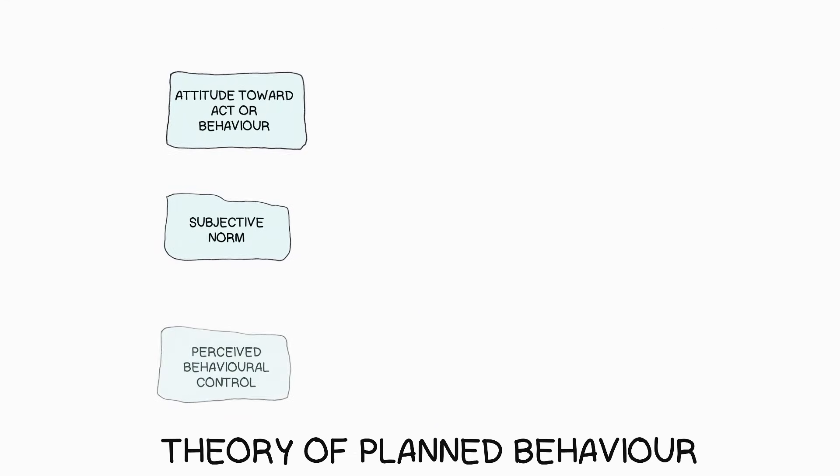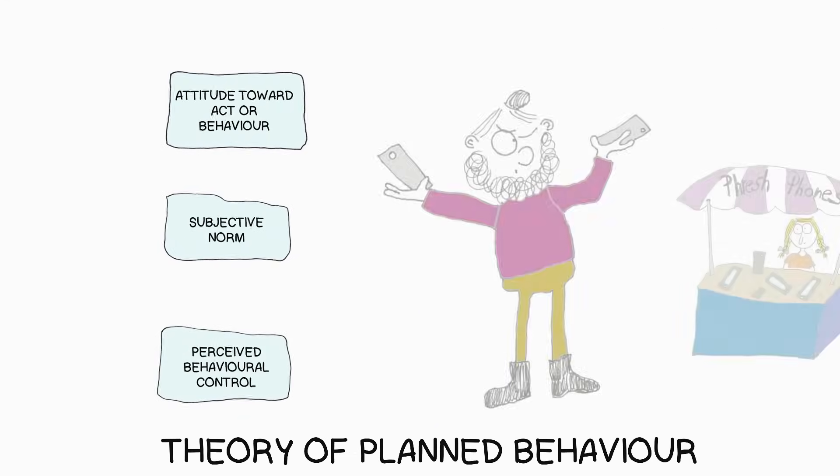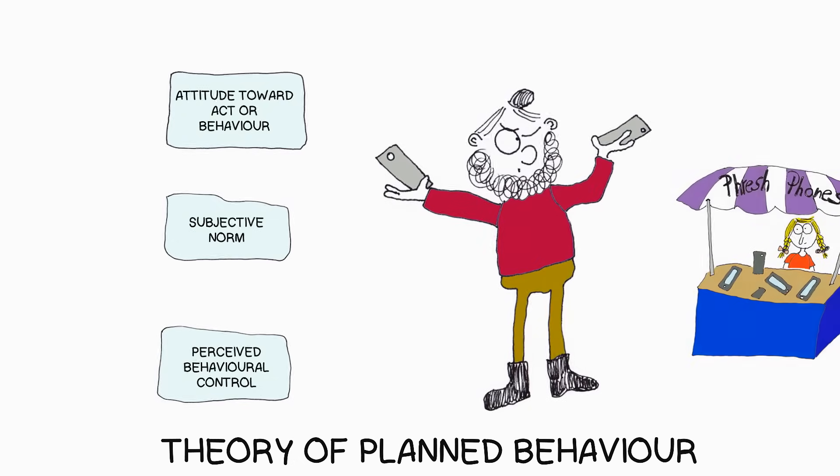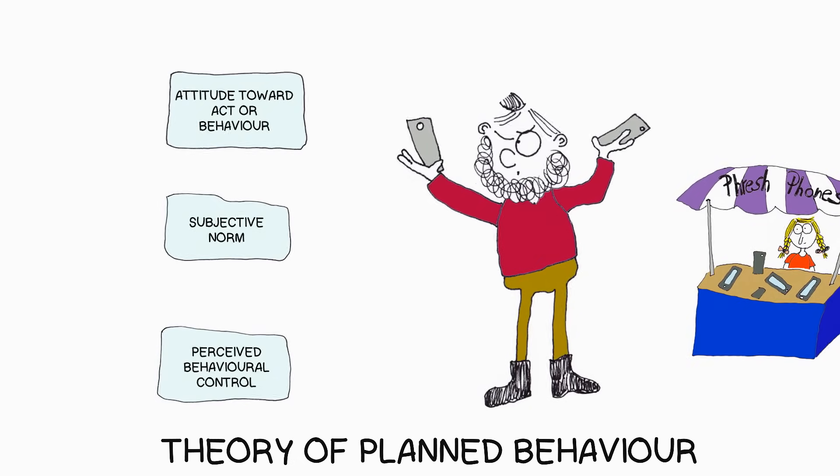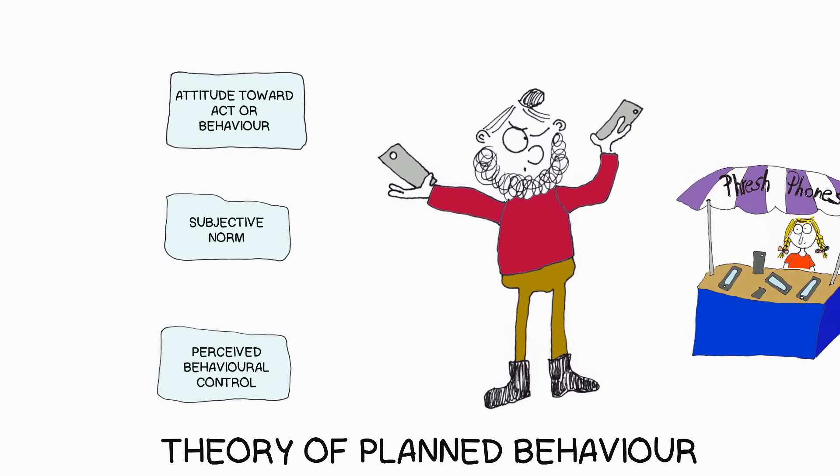A third construct is called perceived behavioral control. And what this construct actually expresses is a person's belief on how easy or hard it is to display a certain behavior or act in a certain way.